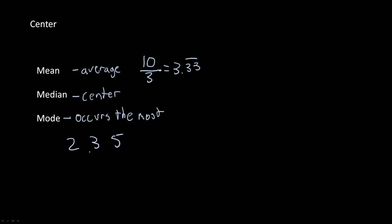The median would be lining up every single number from least to greatest and crossing one off from each side until you get one or two numbers left. Here, the median would be 3. And the mode — because every single number occurs the same amount of times — every number would be the mode, which doesn't tell us much about the distribution of the data set.